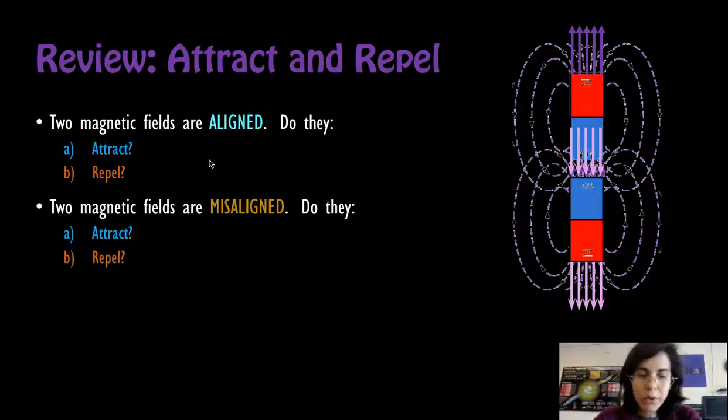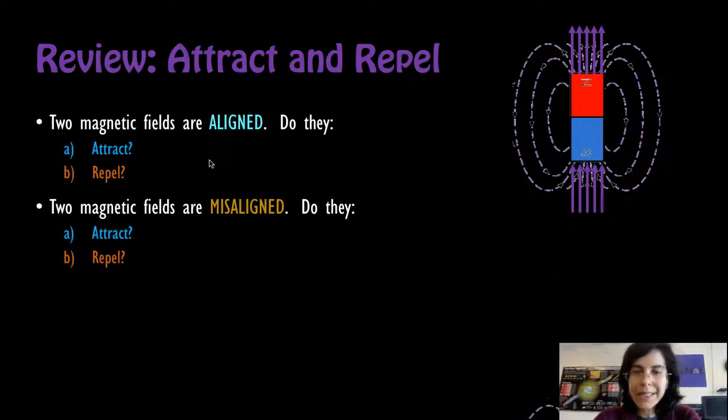Ready? Of course, this is the opposite. They repel. This is south to south. They are going to get out of there as soon as they can if they're free to move. Misaligned magnetic fields repel.